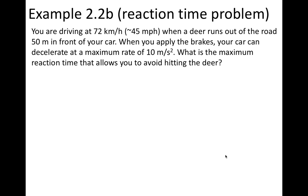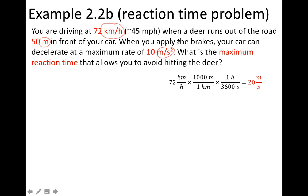The question is: what is the maximum reaction time that allows you to avoid hitting the deer? We'll use a graph to solve the problem, but first we need consistent units. The speed is given in kilometers per hour, the distance in meters, and the acceleration in meters per second squared. Setting up conversion factors so that kilometers and hours cancel, we find that 72 kilometers per hour converts to 20 meters per second.